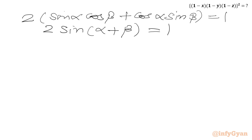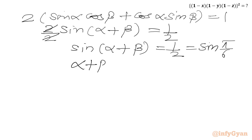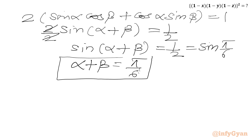Dividing both sides by 2, we get sin(α + β) equal to 1/2, which is sin(π/6). So α + β equals π/6 as the principal solution. Let us call this equation number 4.